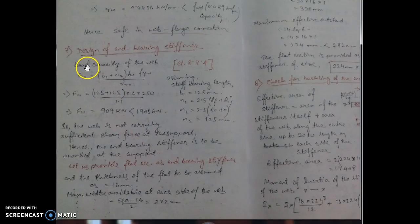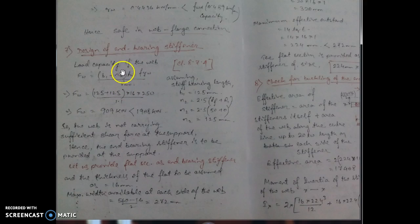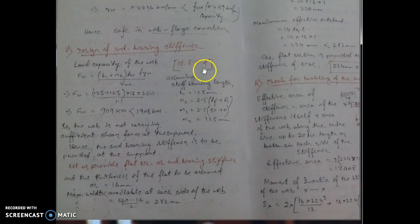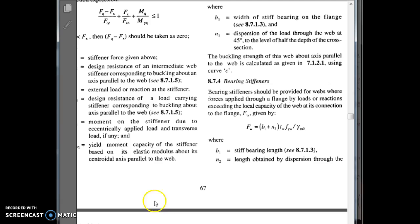Now we are in step number 7 — the design of the end bearing stiffener. Before designing the stiffener, we have to calculate the load, the amount of load which is carried by the web. For this, we have to use clause number 874.